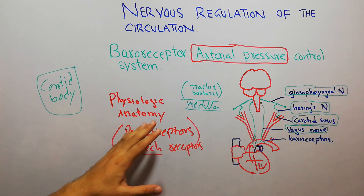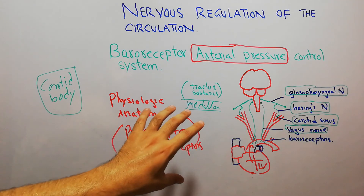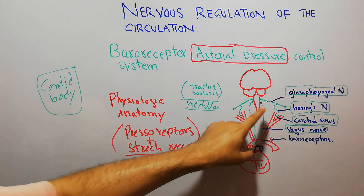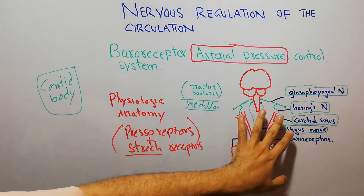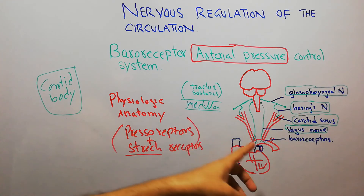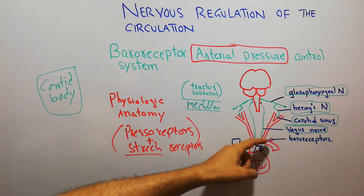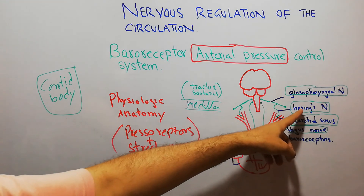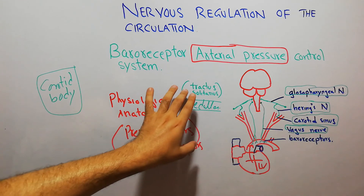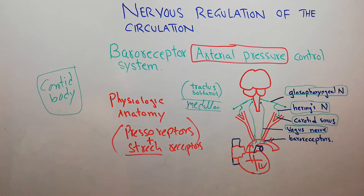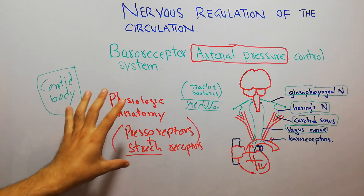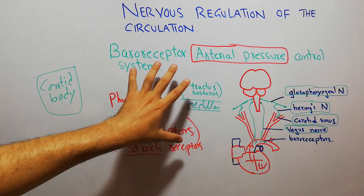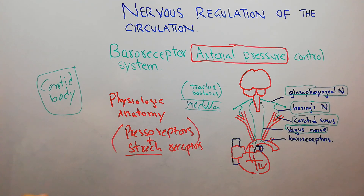Baroreceptors are pressure receptors and stretch receptors, present in almost all arteries of the thorax, specifically common in the arch of the aorta and at the bifurcation of the carotid arteries, where they are concentrated in the carotid sinus. Signals from the aortic arch travel via the vagus nerve; signals from the carotid sinus travel via Hering's nerve and then the glossopharyngeal nerve to the tractus solitarius in the medulla. How the brain responds and takes action to control arterial pressure will be discussed in the next lecture.